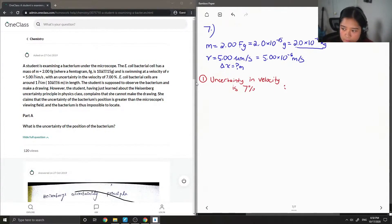We know that the uncertainty in velocity is 7%. So from there, I'll calculate delta v equal to our velocity times 7%, so 0.07. So our uncertainty in velocity is now 3.5 times 10 to the negative 7 meters per second.